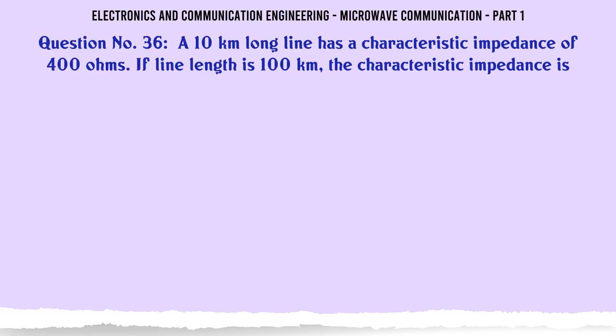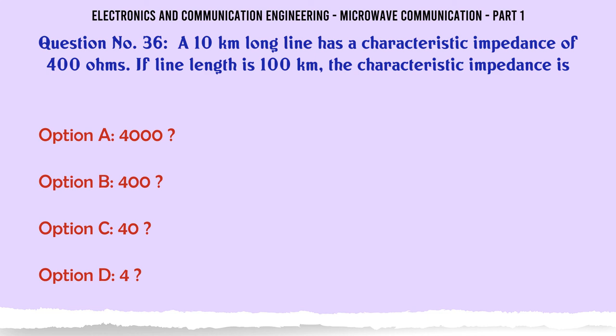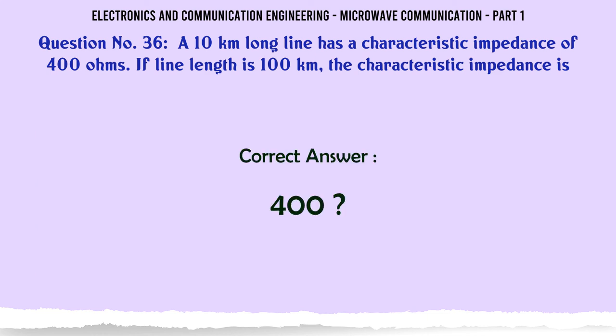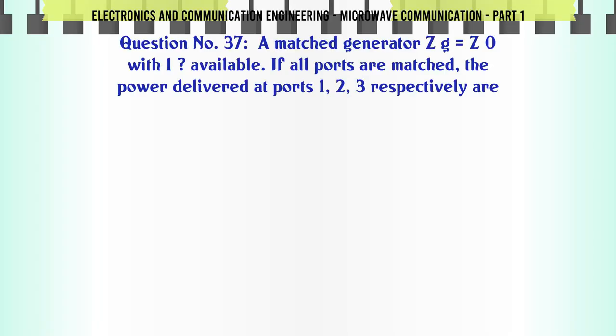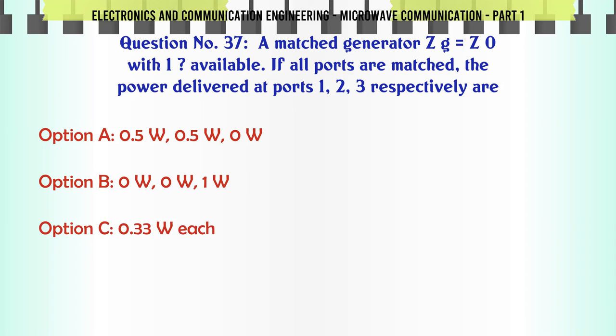A 10 km long line has a characteristic impedance of 400 ohms. If line length is 100 km the characteristic impedance is: A. 4000, B. 400, C. 40, D. 4. The correct answer is 400.